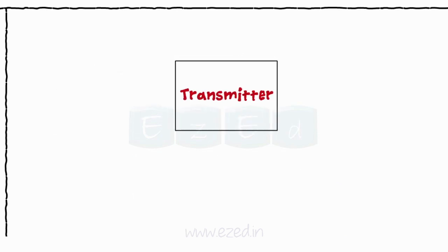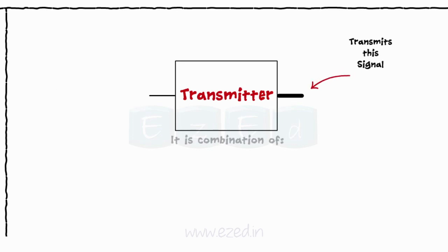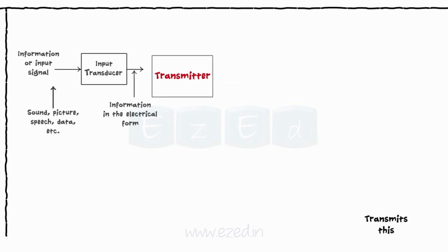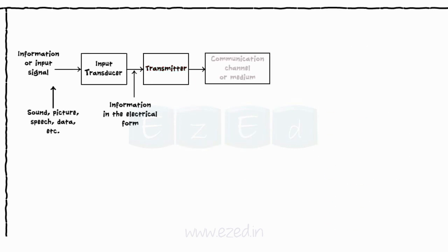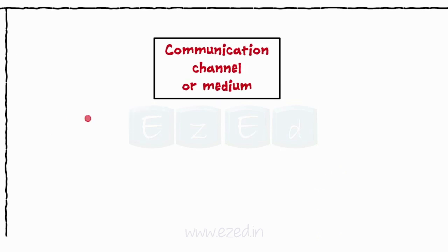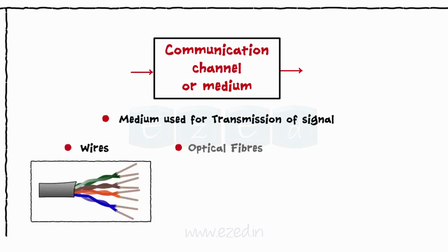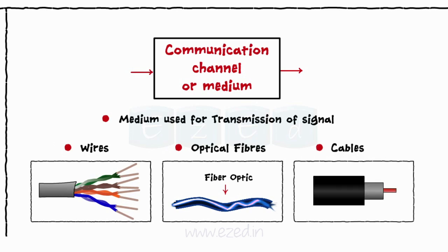Third block is a transmitter. This block increases the power of the signal and transmits it via the communication media available. A transmitter is a combination of different circuits like an amplifier, mixer, oscillator, etc. The next block is a communication channel. It is the medium used for the transmission of a signal from one place to another. Communication medium can be wires, optical fibers, cables, etc.